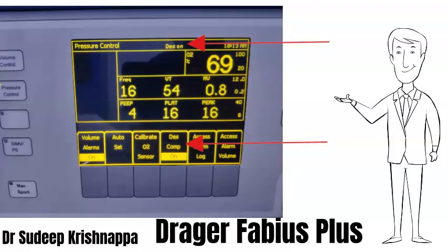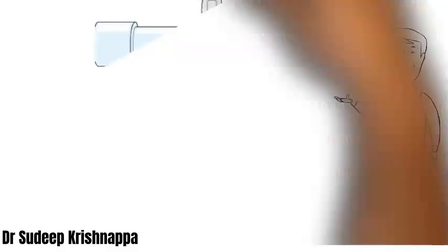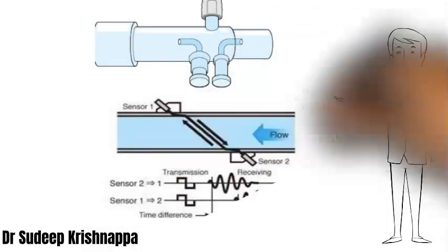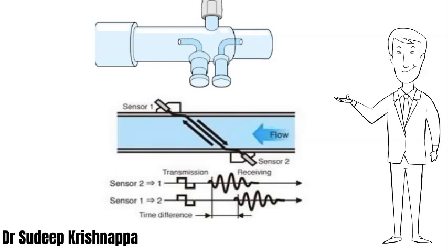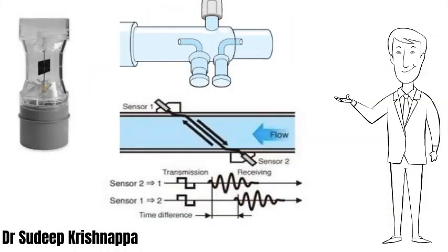Apart from the two types of flow sensors discussed so far, there are a few more other types, namely Pitot tubes, which are a variant of differential pressure transducers, ultrasonic flow sensors, and rotating vane anemometers. Discussing all of them would be out of the scope of this video. I hope this doodly was helpful in providing a basic understanding of some of the commonly used flow sensors. Thank you.